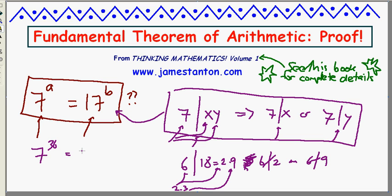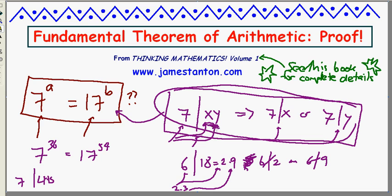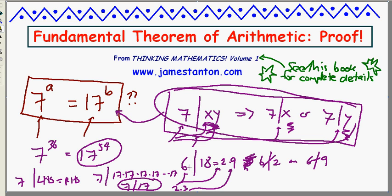For example, if 7 to the 36 happened to equal 17 to the 54, in fact I know I'm wrong right there, then 7 is a prime that goes into the left-hand side. Well, Euclid's key property of primes here says that if 7 goes into a product, then 7 must go into one of the individual terms. Well, 7 is going into the left-hand side, but the left-hand side equals the right-hand side. So 7 is actually going into this product of 17. 7 goes into 17 times 17 times 17 times 17, 54 times. But by this key property of primes, that means 7 goes into one of the individual numbers. Well, all the individual numbers are the same. They're 17. But 7 doesn't go into 17. That's incorrect. Therefore, that's incorrect. And therefore, the assumption that left-hand side equals the right-hand side has to be false. There's no way a power of 7 can equal a power of 17.